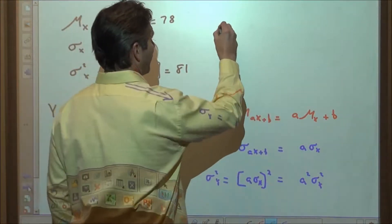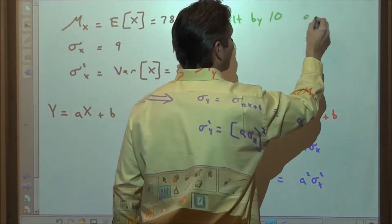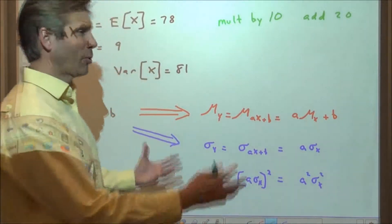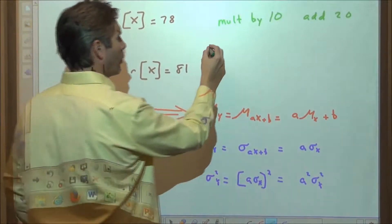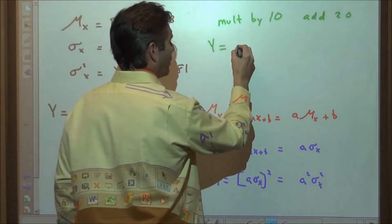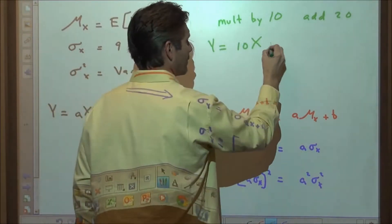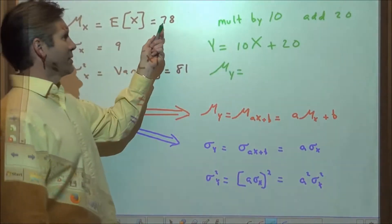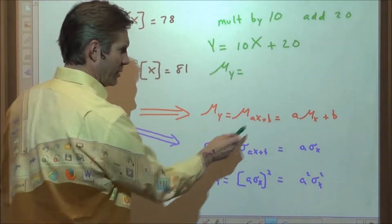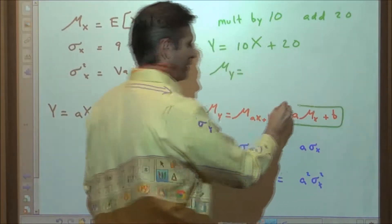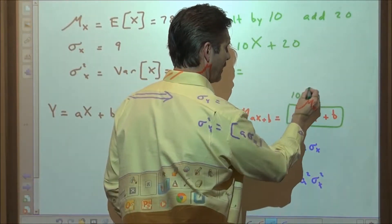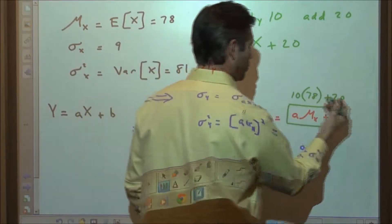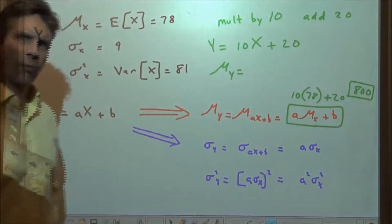For example, what if we were going to multiply all the scores by 10 and then add 20 to all the scores? We define y = 10x + 20. The new mean of y is 10 times the old mean of x, so that's 10 times 78, plus 20, giving us a new mean of 800. So the new mean average would be 800 for the transformed random variable.